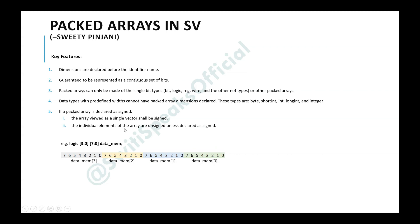The individual elements of the array will be unsigned unless they are declared as signed. This array consists of 4 elements: data_mem[0], data_mem[1], data_mem[2], and data_mem[3]. These individual elements are unsigned unless you explicitly declare them as signed.